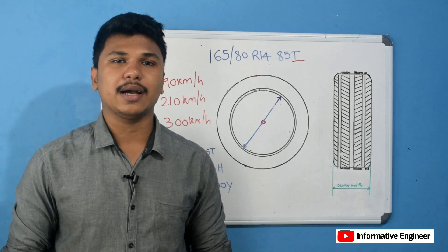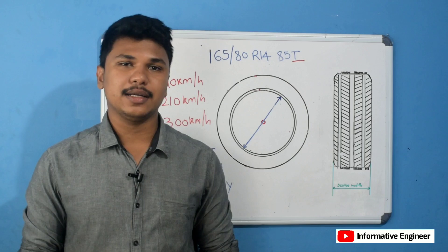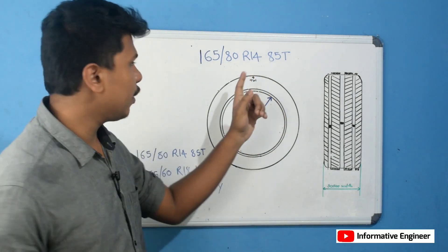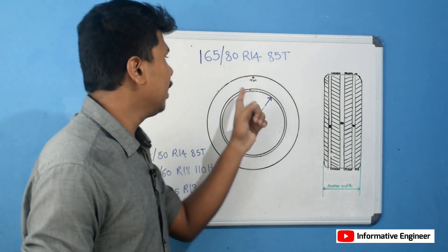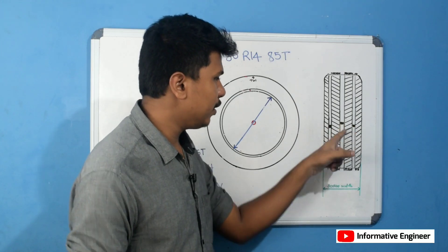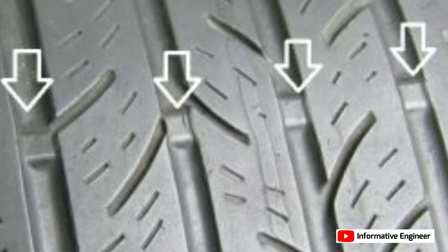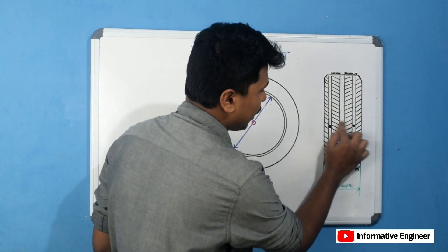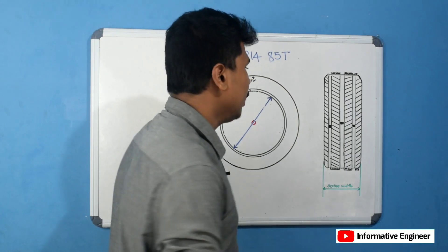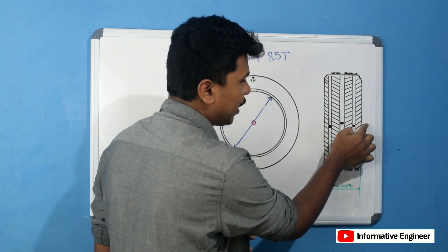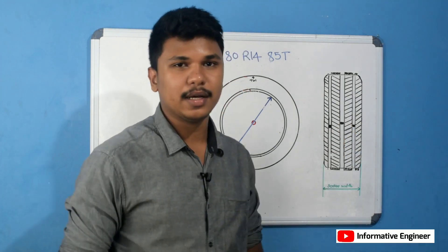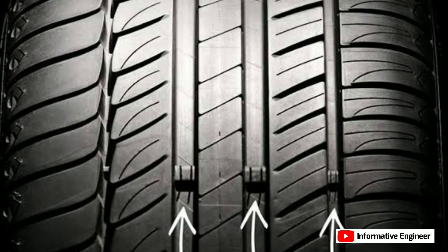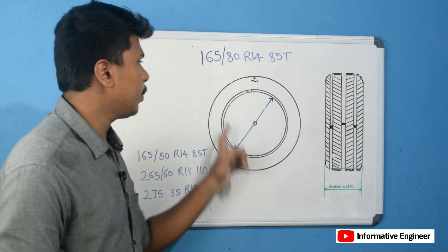If you follow the manufacturer's recommendation, fill the tire to the correct air pressure and stay safe. Next is the tread wear indicator. The TWI is marked on the sidewall with an arrow mark. If you look at the arrow marks and inspect the tread groove, you will see a small raised indicator in the groove. This is the tread wear indicator. When the tread level wears down to the indicator level, it means the tire needs to be replaced. The tread wear indicators are on the tire so you can check it out.